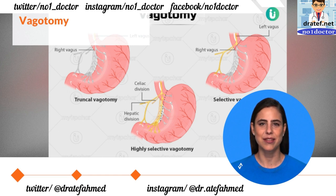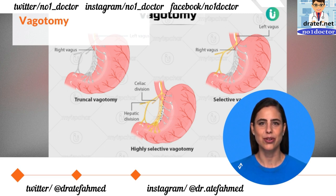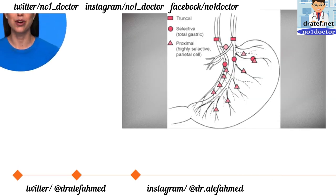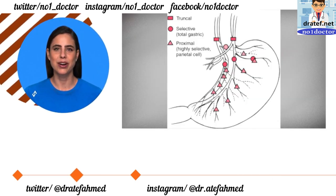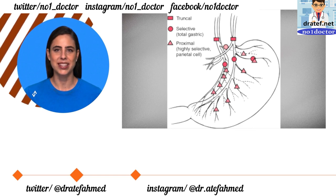Truncal vagotomy divides the vagal trunks at the level of the esophagus, decreasing emptying of solids. Proximal vagotomy — also called highly selective vagotomy — divides individual fibers and preserves the crow's foot, resulting in normal emptying of solids. Addition of pyloroplasty to truncal vagotomy results in increased solid emptying.